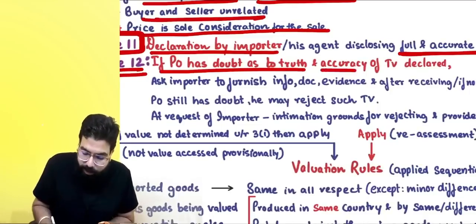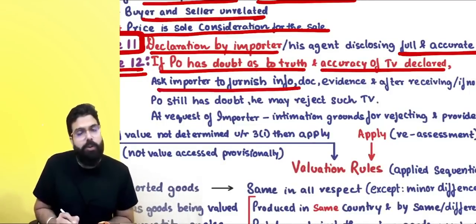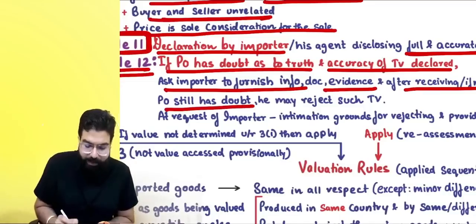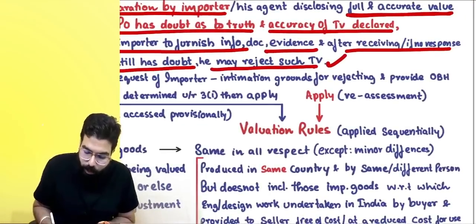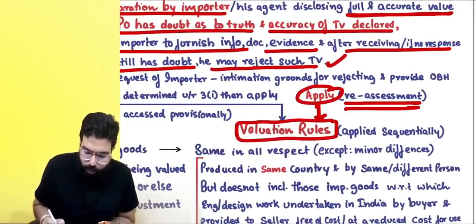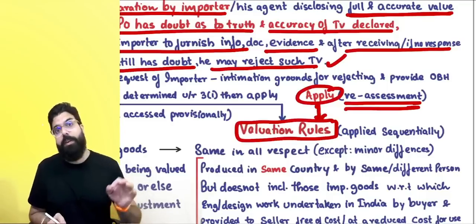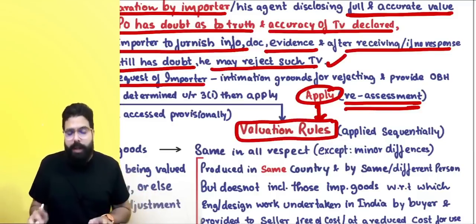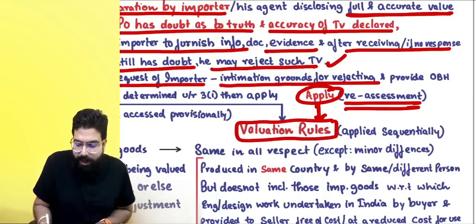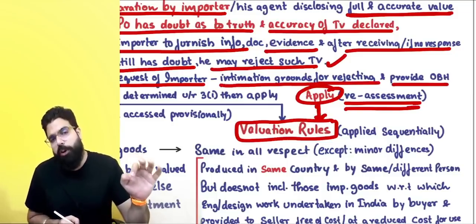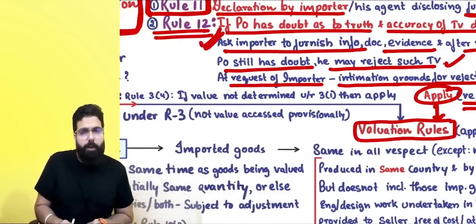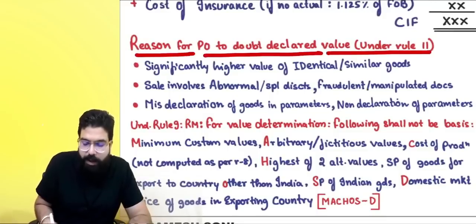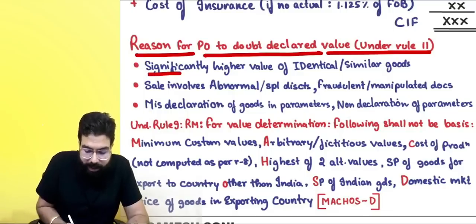Rule 12 says: if the proper officer has any doubt about the truth and accuracy of the declared value, he will ask for additional documents and evidence. After receiving those documents, or if you don't respond, and the PO still has a doubt, he will reject the transaction value and do reassessment by applying the valuation rules. If requested by the importer, the officer must provide grounds for rejection and an opportunity of being heard.